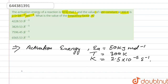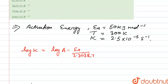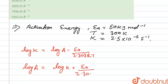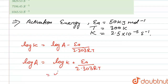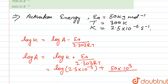We know that log of k is equal to log of A minus Ea upon 2.303RT. So we have to find log of A, so we write: log A is equal to log k plus Ea upon 2.303RT. We substitute the values: log of 2.5 into 10 to the power minus 5, plus Ea that is 50 into 10 to the power 3 joules, upon 2.303 into R that is 8.314, into T that is 300.